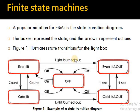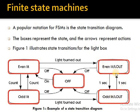If there is a light burn out, then we have a state where the even light is on and off (flashing). If the even light burns out, the odd light will flash on and off. Similarly, if the odd light burns out, the even light flashes.